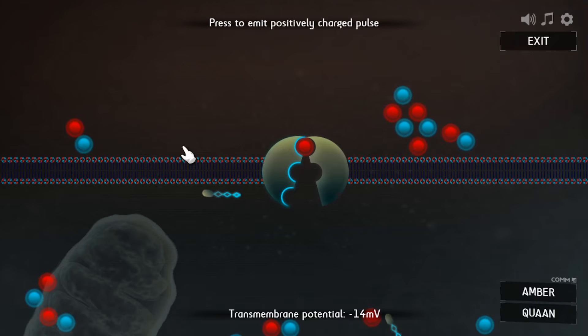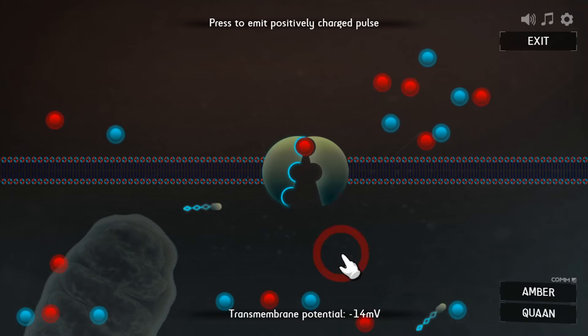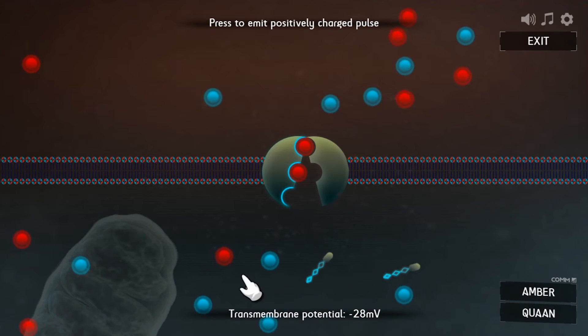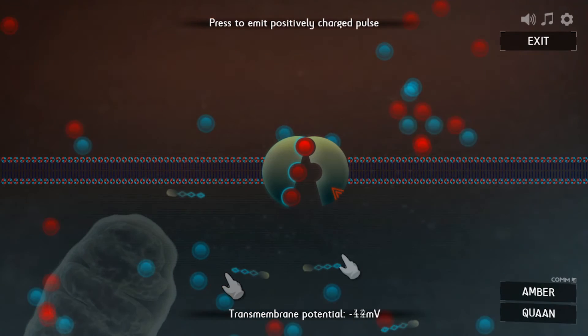You have to get all the positive red ions outside the cell using this enzyme, the sodium-potassium pump. And you move the ions around using this totally fictitious positive charge pulse. It attracts negative ions and repels positive ones.